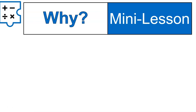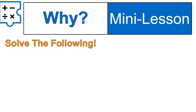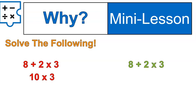First off, the why behind the order of operations. I think it's easiest to show you in an example. If I were to ask you to solve 8 plus 2 times 3, it could be solved in two different ways. One, you could go left to right: 8 plus 2 is 10 and 10 times 3 is 30. Or you could start by multiplying: 2 times 3 is 6 and then add them together. Notice in both cases you get a different answer — that's why we need the order of operations.